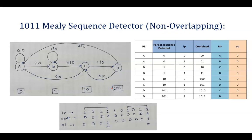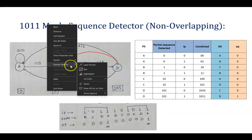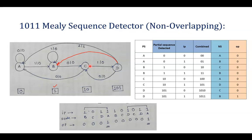So that is how to implement the non-overlapping 1011 Mealy sequence detector. The only change from the overlapping case is that instead of transitioning from D to B (treating the last '1' as the first of the next sequence), we transition from D to A. For more details you can see both the non-overlapping and overlapping videos. Thank you everyone. Happy learning.